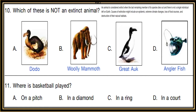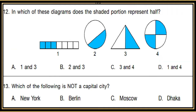Question 11: Where is basketball played? Options are: on a pitch, in a diamond, in a ring, or in a court. Question 12: In which of these diagrams does the shaded portion represent half? Options are: 1 and 3, 2 and 3, 3 and 4, or 1 and 4. Identify the diagram where the shaded portion represents exactly half.